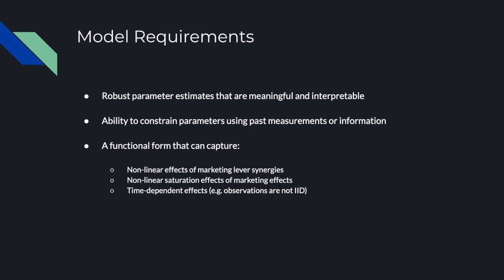We want to use the parameters to make meaningful comparisons between different marketing levers — in other words, not a black box model, but one that can still capture all the complex relationships between parts of the model. Another requirement is the ability to constrain parameters using past measurements or information. If we had past experimentation results, incrementality tests, or A/B tests, we want to use those as Bayesian priors on some of these marketing lever estimates, to constrain the impact based on what we've seen in experimentation, and flexible model functional form that captures all of these marketing-specific effects.